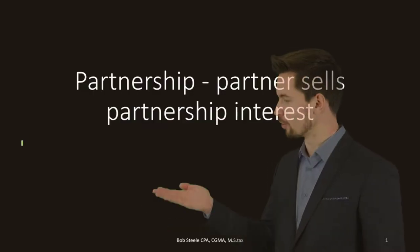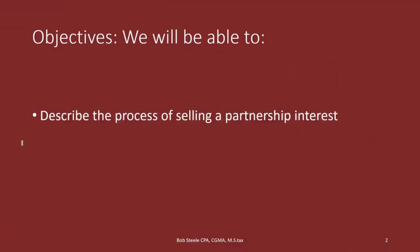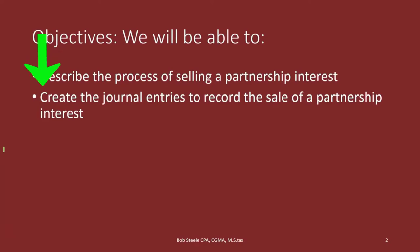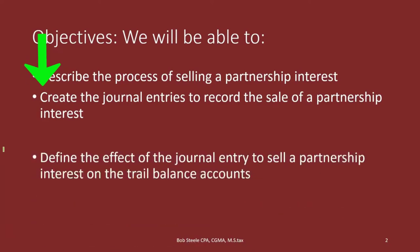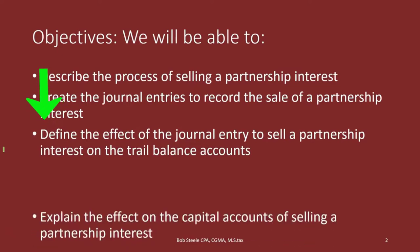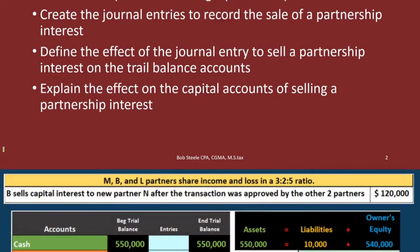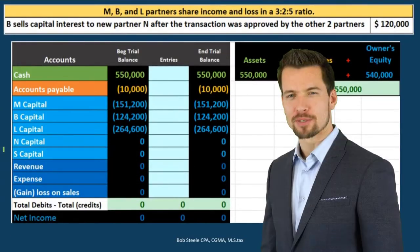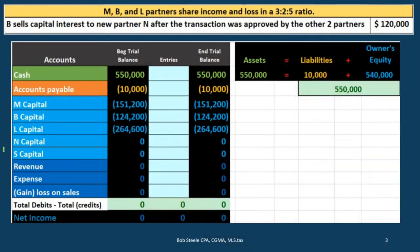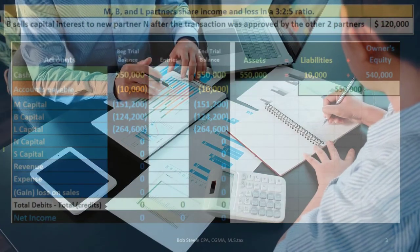In this lecture we're going to talk about partnerships and the selling of a partnership interest. We will be able to describe the process of selling a partnership interest, create the journal entry to record the sale, define the effect of that journal entry on the trial balance accounts, and explain the effect on the capital accounts. We're going to do this by looking at a problem, posting the transaction, and seeing what happens to the capital accounts in both a trial balance and a worksheet format.